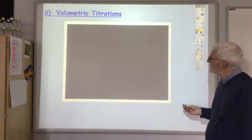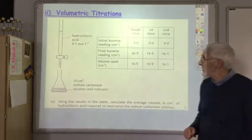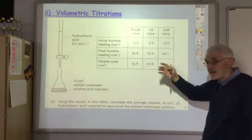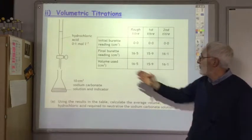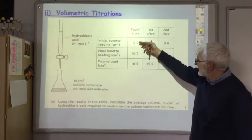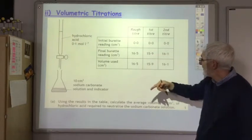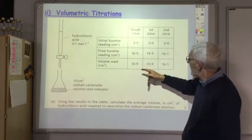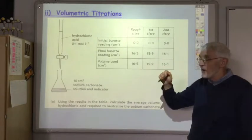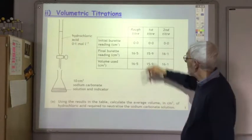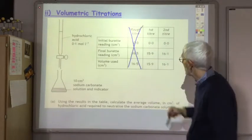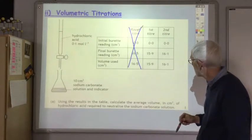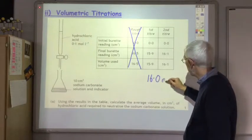In the exam, titration questions typically give you a table of results. The volume used is the difference between the final and initial burette readings. You take the average of the two results that are within 0.2 cm³ of each other — never use the rough value. In this example we have 15.9 cm³ and 16.1 cm³, giving an average volume of 16.0 cm³ of hydrochloric acid added from the burette.